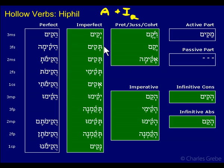Remember, kum is actually a waw-middle verb, not a yud-middle. So this yud comes from the fact it's a Hiphil, not from the second radical. The result is that in the Hiphil you cannot distinguish waw-middle from yud-middle, because they all take yud due to the i-class theme vowel in the Hiphil. So you can't distinguish between kum and sim — you can't distinguish waw-middle from yud-middle in the Hiphil.